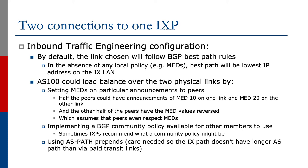Another option is implementing a BGP community policy which is available for other members to use. Sometimes internet exchange points recommend what a community policy might be. We could try using AS path prepends, but we need to be careful, because we don't want the IX path to be longer than that via paid transit links. Otherwise we could well end up with peering traffic coming over our expensive and maybe long-haul transit connections.